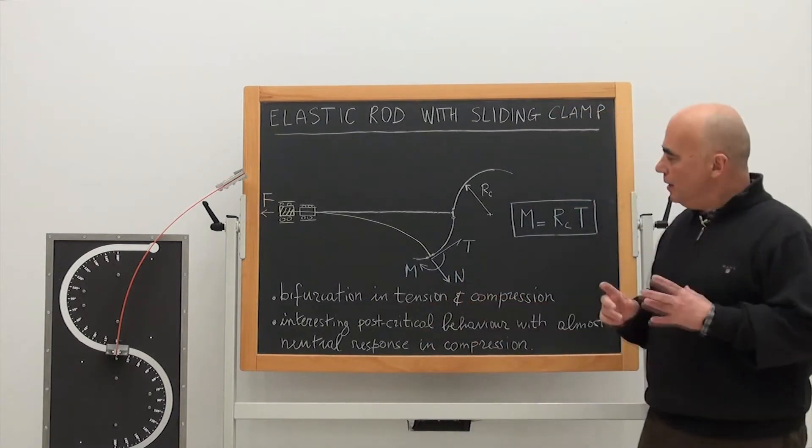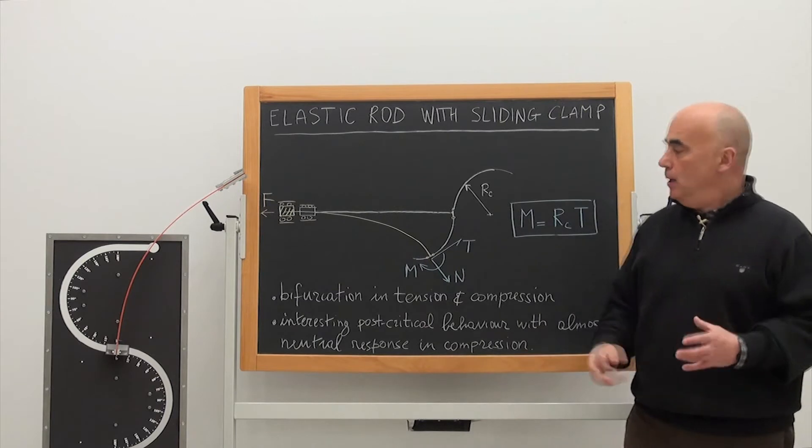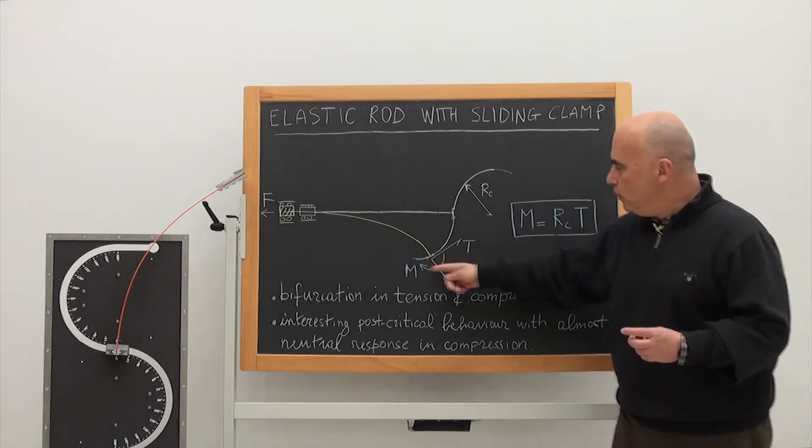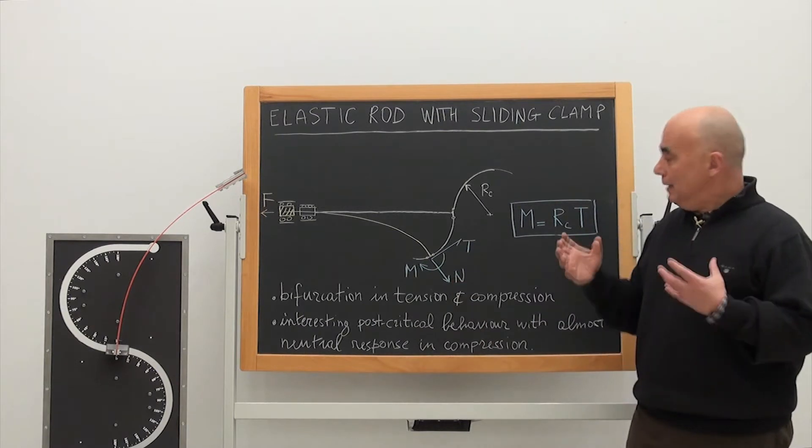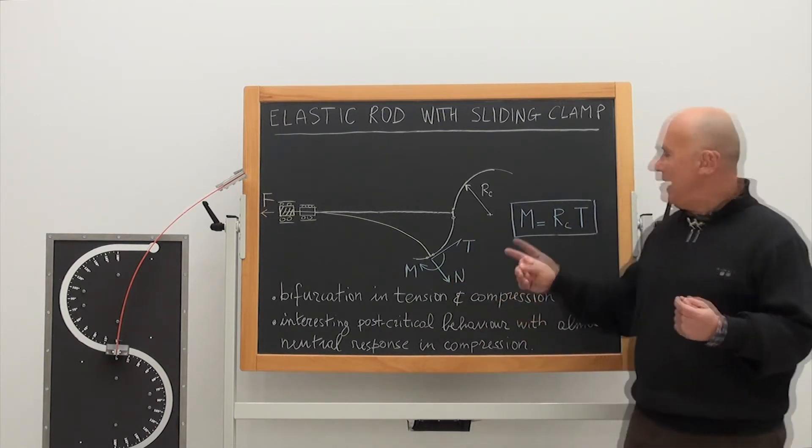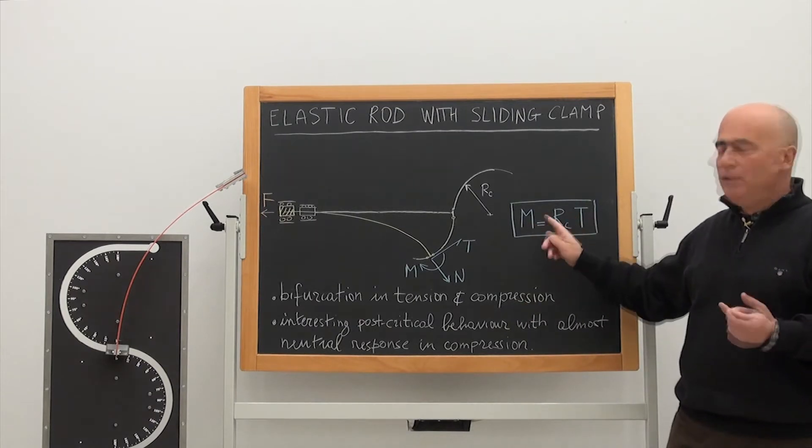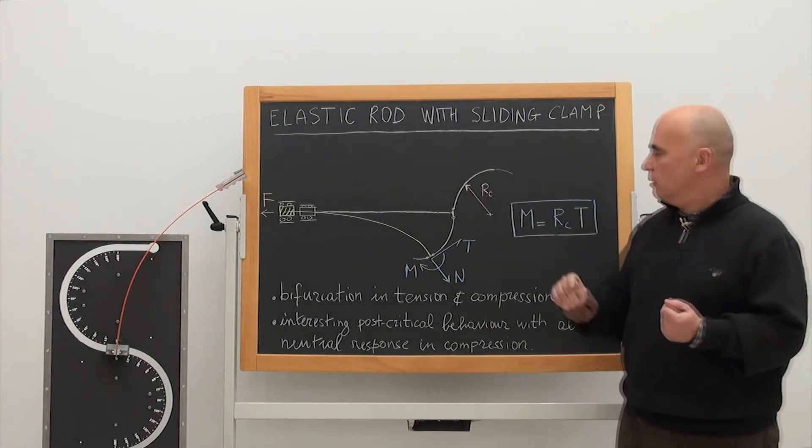The peculiarity is the non-trivial boundary condition at the sliding clamp. At the sliding clamp, we may have bending moment, shear force, and axial force. The interesting point is that the shear force is not zero but has to be related to the bending moment in this linear way where RC is the radius of this circle.